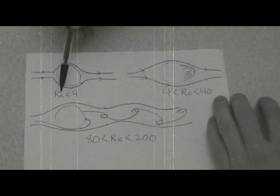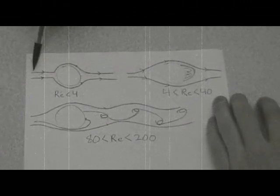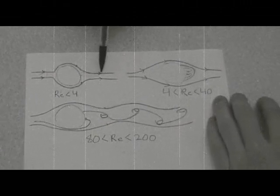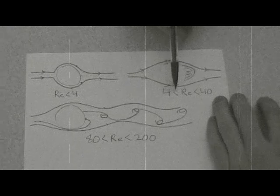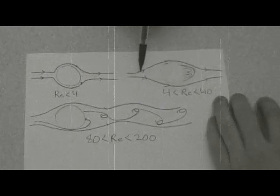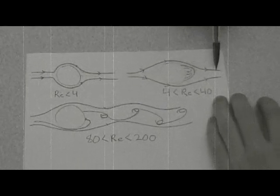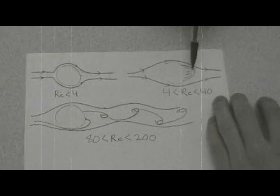At very low Reynolds number, the flow around the cylinder is laminar and steady. Increasing the Reynolds number between 4 and 40, flow separates from the trailing edge of the cylinder and stationary vortices form in the wake.